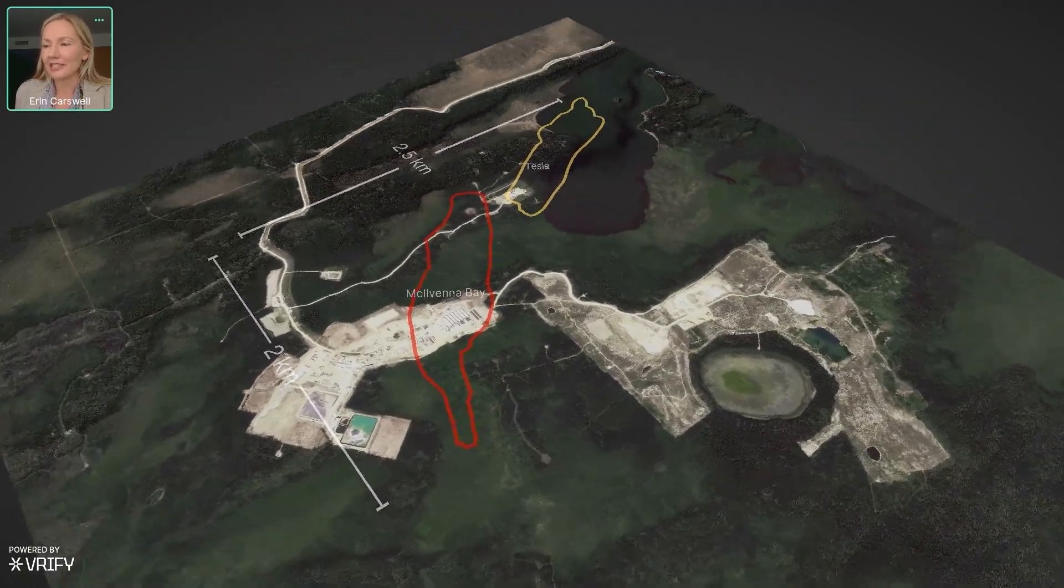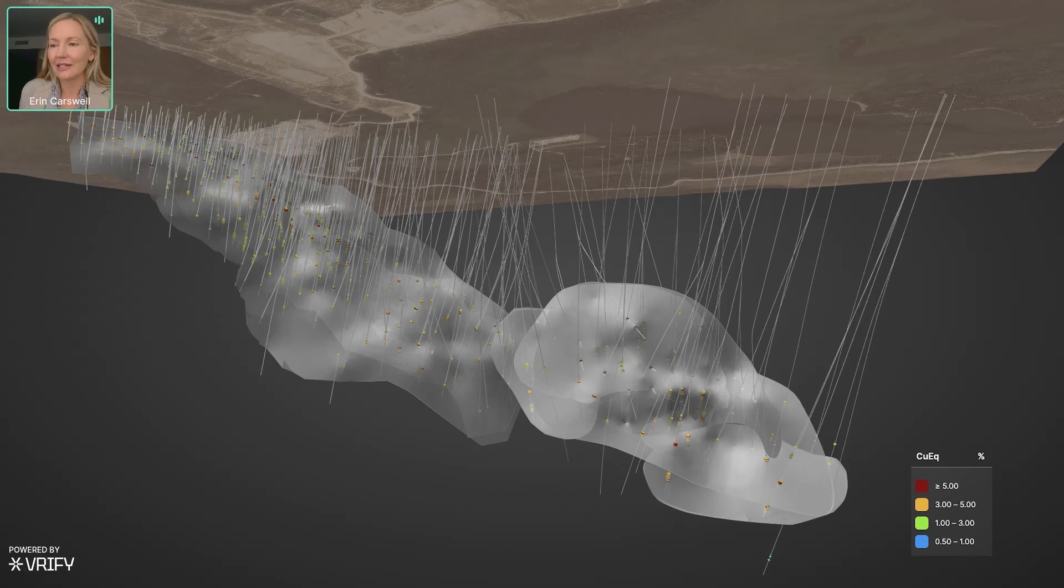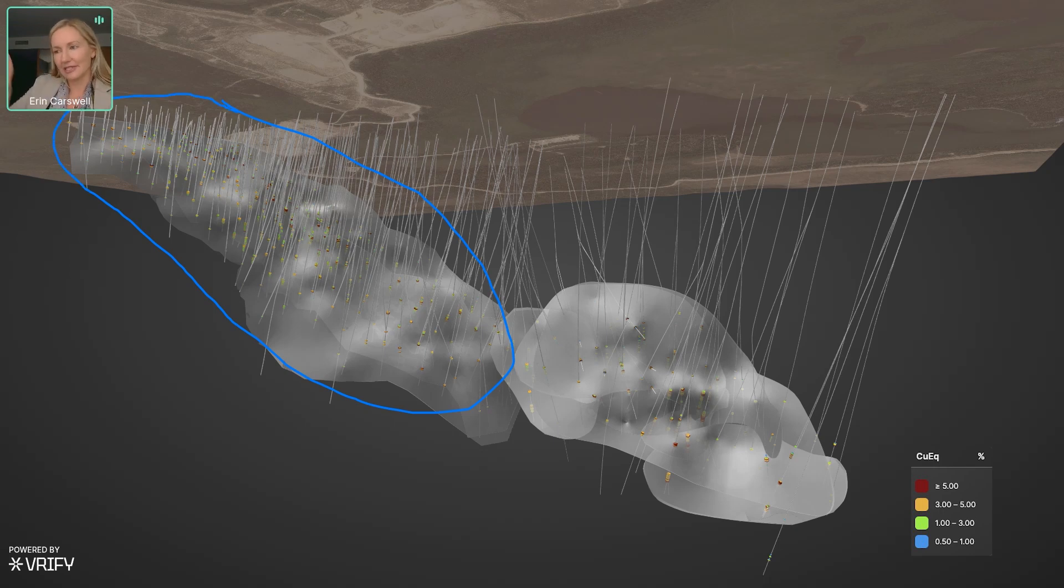Now we'll drop under the ground here. One thing I want to point out immediately, and I'll grab my little color highlighter here, is that McElvester Bay, which are these grey shells here, which you can see the paler grey hole traces and copper equivalent assays going into those shells. This is showing resource shells. So these are shells that have gone through a proper resource geology process, they have economic parameters included, and they've been clipped to that with the drilling density to support it.